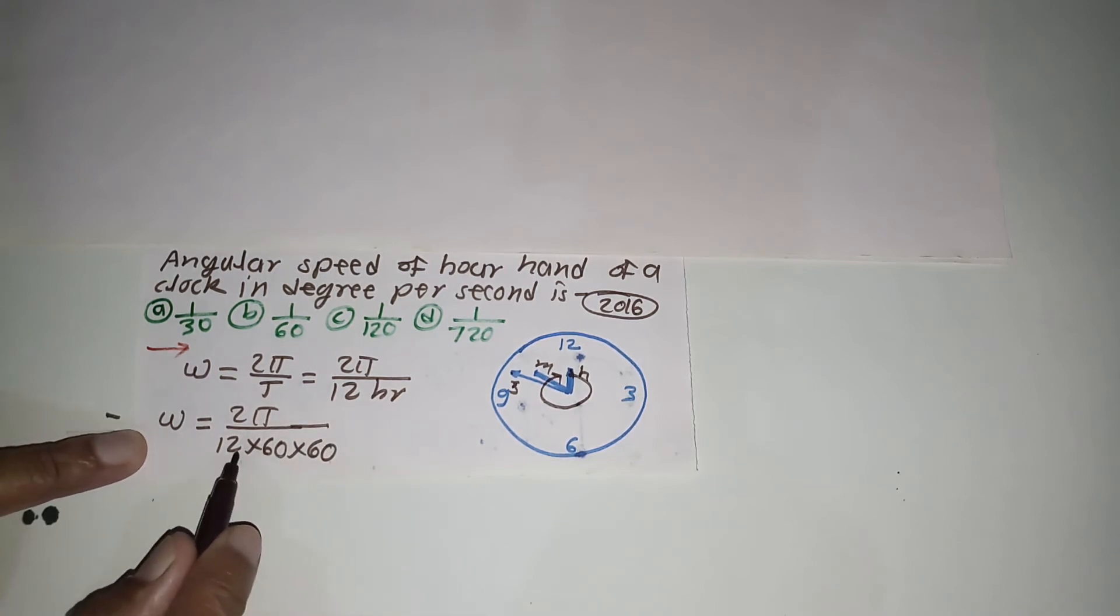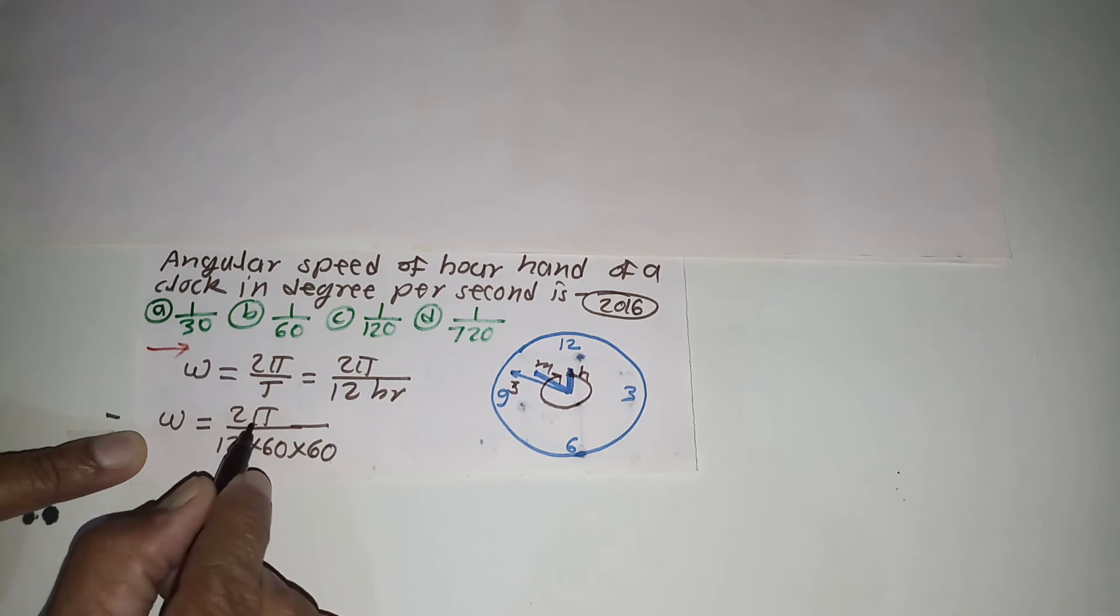But actually the unit of this quantity is radian. Therefore the total unit is radian per second, but we need degree per second. Since π radian is 180 degrees, we can substitute.